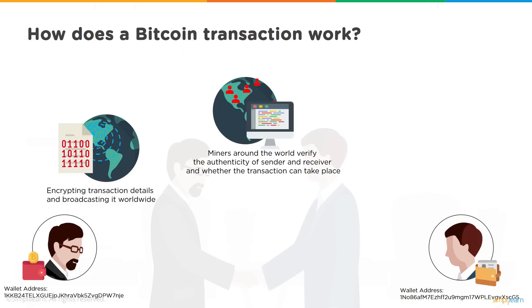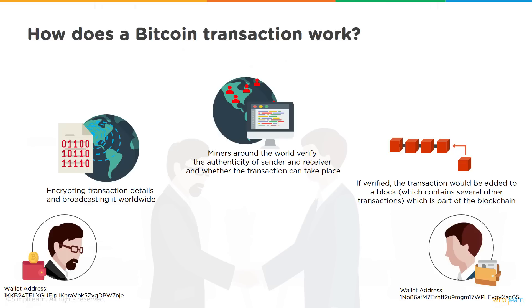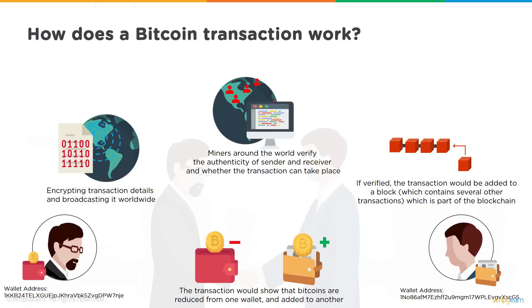Miners around the world verify the authenticity of the sender — whether the sender has the right balance — and also validate the receiver's identity, the genuinity of its wallet address, and the sanity of the transaction. If verified, the transaction is added to a block containing several other transactions. Once the block is verified it is added to the main blockchain, the Bitcoins are reduced from the sender's wallet and added to the receiver's — all completed without intermediaries like banks.